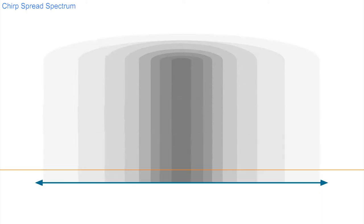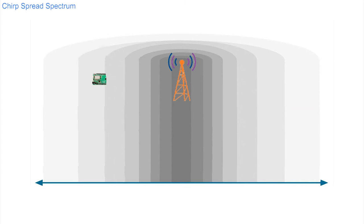The best signal occurs when the end point and the gateway are in close proximity, but as we have seen, the attenuation increases as the distance increases. Eventually the power of the received signal becomes unusable. This could be likened to trying to hold a conversation at a greater and greater distance.